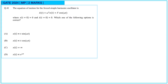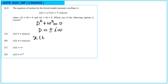Next question. The equation of motion for a forced harmonic oscillator is x double-dot plus ω squared x equals f cos(ωt). Its characteristic equation is D squared plus ω squared equals 0, so D equals ±iω. Therefore x(t) equals c1 e^(iωt) plus c2 e^(−iωt).